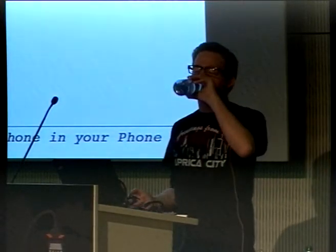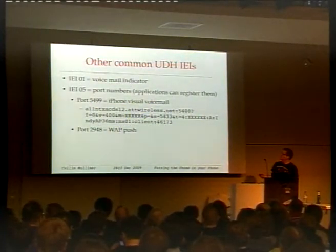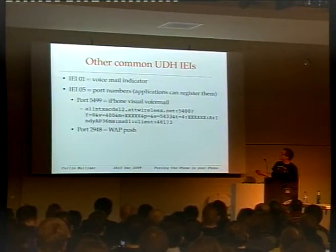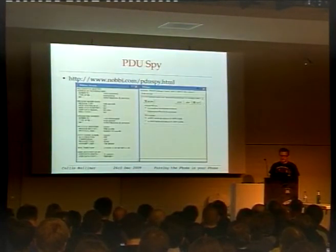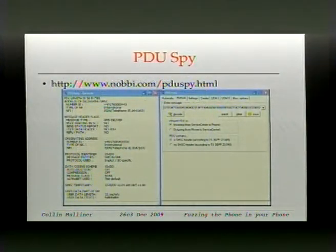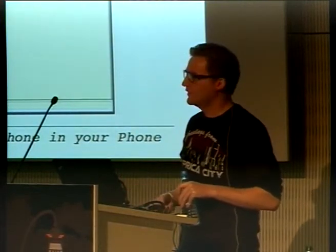Other user data headers include the voicemail indication, which can set icons on your phone to notify you of a new voicemail, and port addressing — similar to TCP/IP ports — where you can specify which port the SMS goes to. For example, iPhone visual voicemail is sent to a specific port and is basically a URL. There's also WAP push. When you first start looking at SMS, a nice tool called PDU Spy lets you take messages from the serial line, paste them in, and see exactly what fields are present — useful for validation when you generate your own SMS.